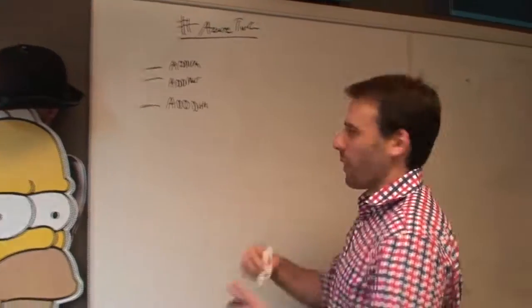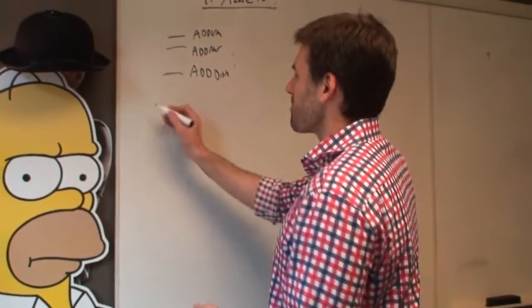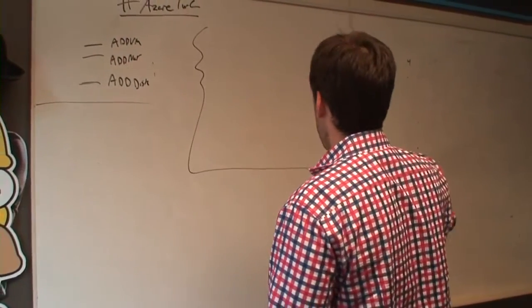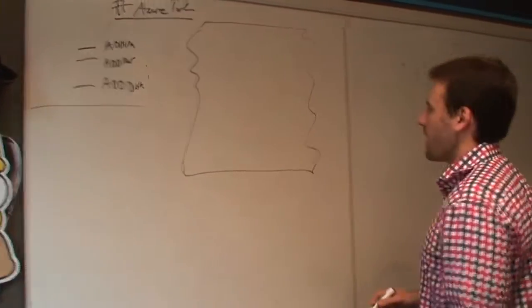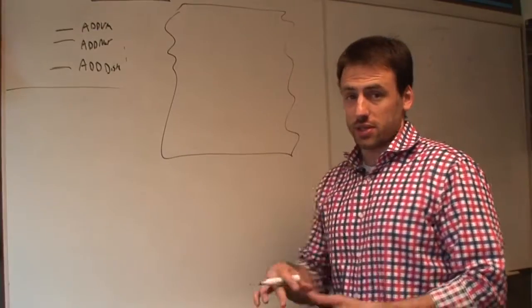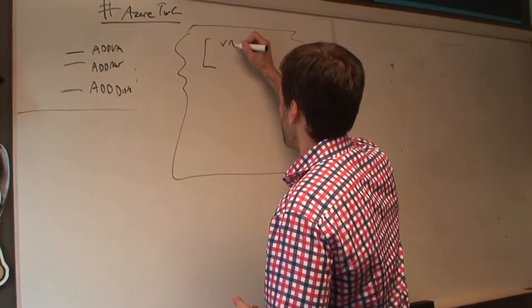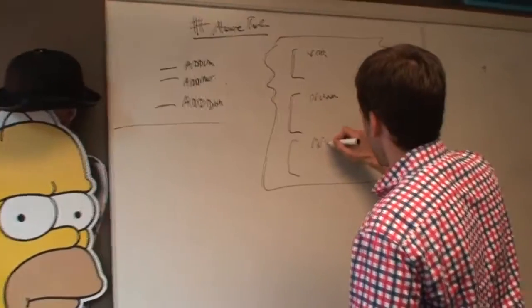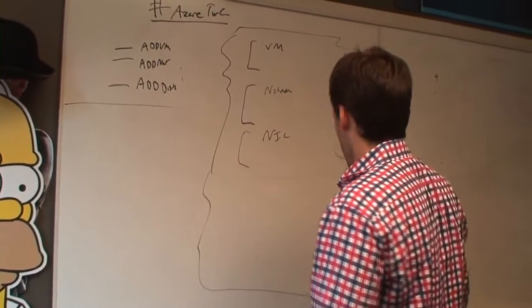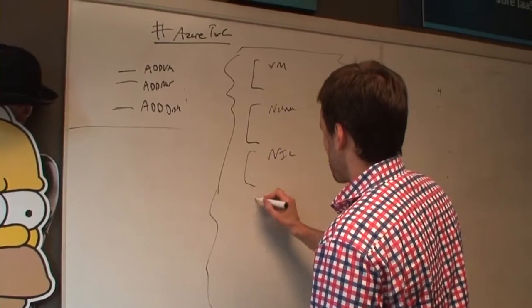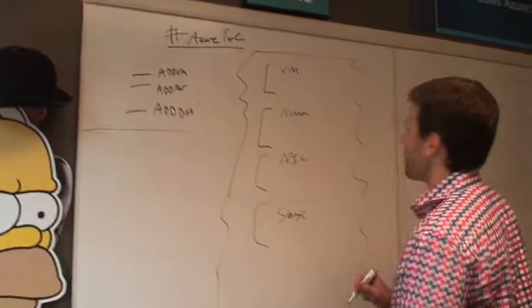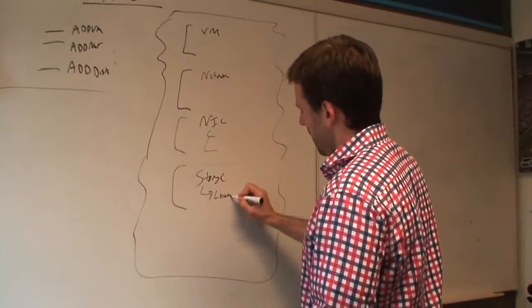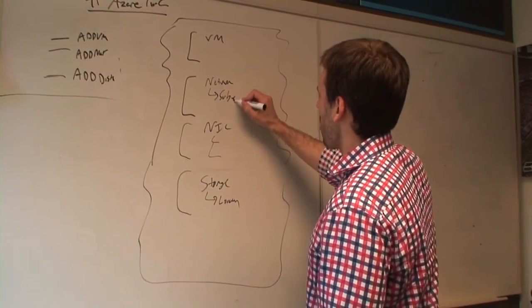These end up being APIs that you call one after the other, which ends up being a little bit cumbersome. So what we've done here is we've actually created a template language — it's fully declarative. It splits up all the resources into their own distinct sections. You now have a VM resource, a network resource, you can do things like NIC, as well as a storage account.